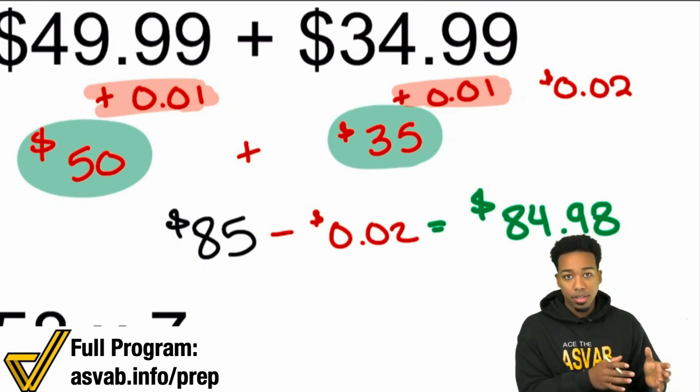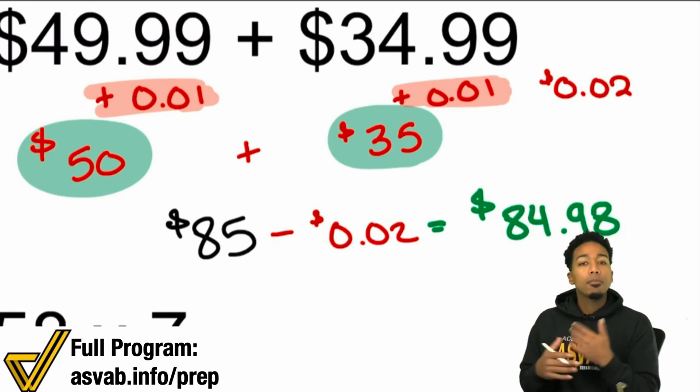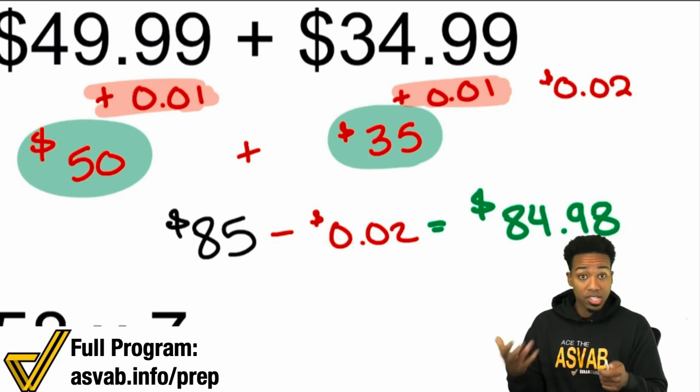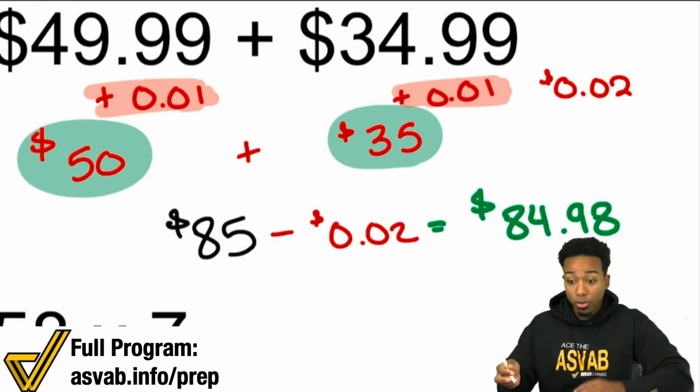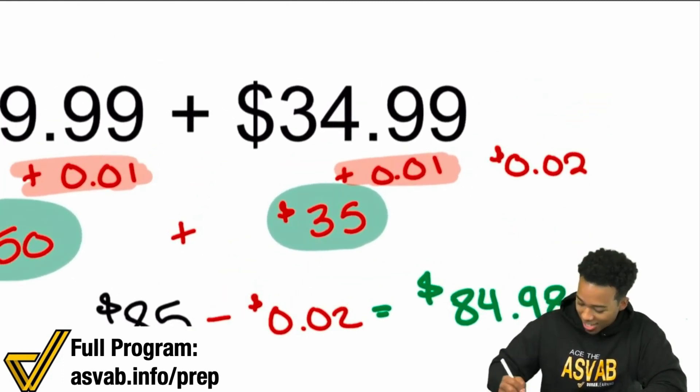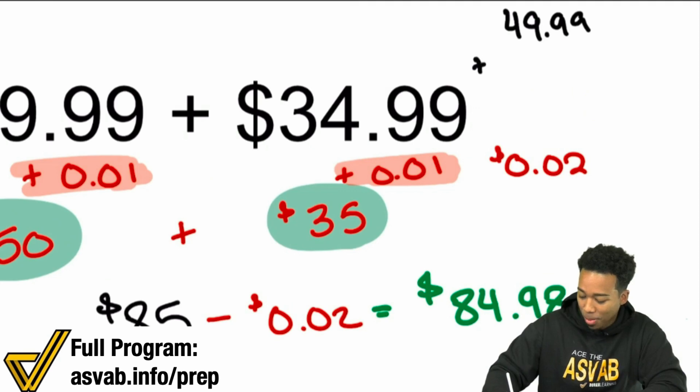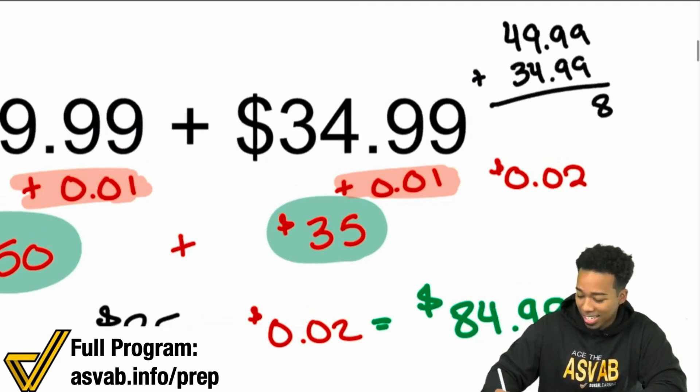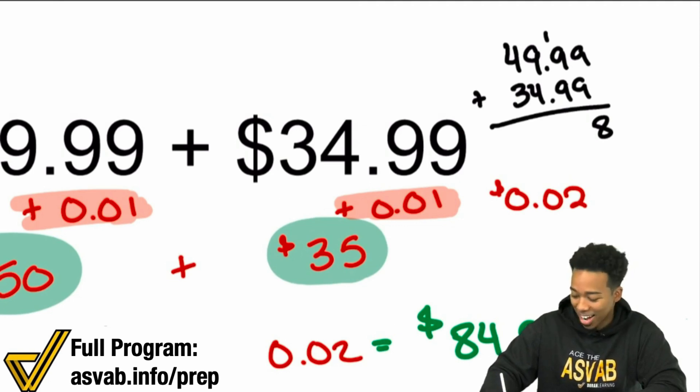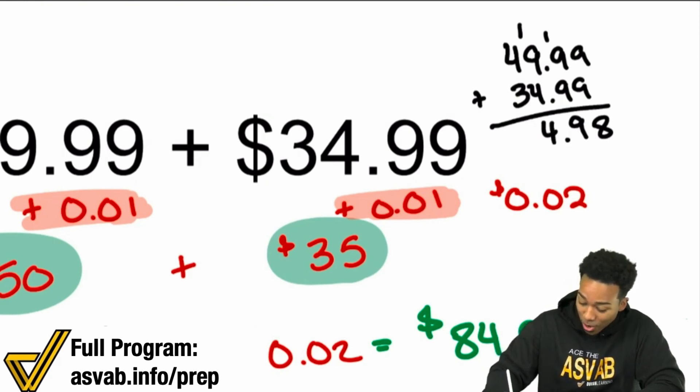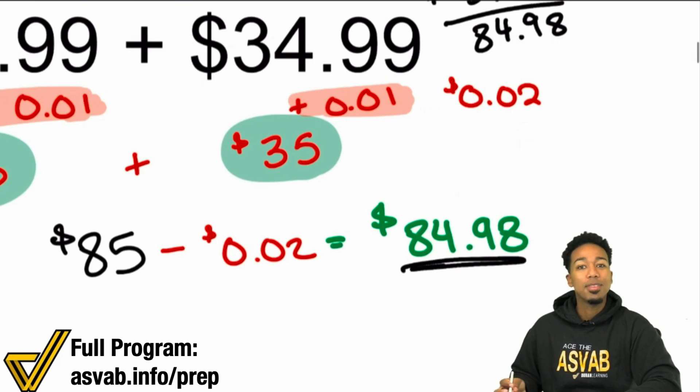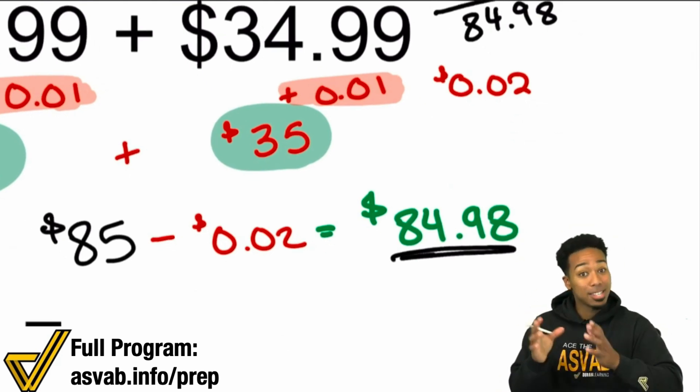So there it is. And again, this is happening in your head. I'm showing you the process, nice and slow because I want you to see what's going on. But really on the test, when you actually see something like this, this should be automatic because you'll say, round up to a dollar, round up to a dollar, add them to make it easy, then take away those two pennies, done. As opposed to going like this. $49.99 plus $34.99. 9 plus 9 is 18. Carry the 1. 9 plus 9 is 18. Carry the 1 is 19. 9 plus 4, that's going to be 13. You see how long that's taking? You don't need to do this. You can just go ahead and use mental math to make your life so much easier. So that's number one here. And that's just for addition.